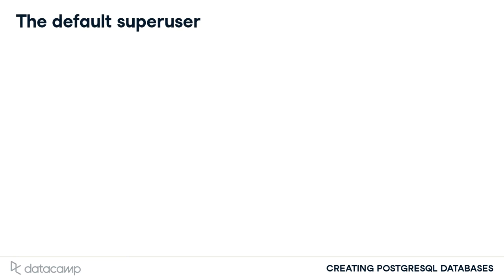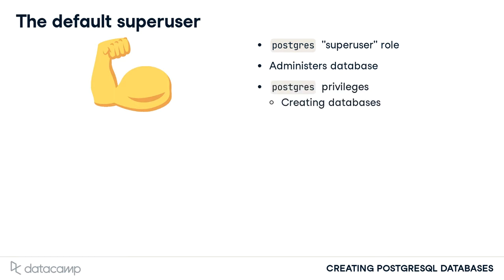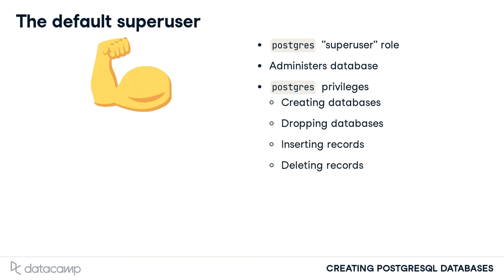In a default installation of PostgreSQL, a database user named PostgreSQL is created. This user has what is known as a super user role, and is necessary because database administration tasks can be accomplished through this user. Some of the capabilities of this user include creating databases, dropping databases, inserting records, deleting records, and dropping tables.